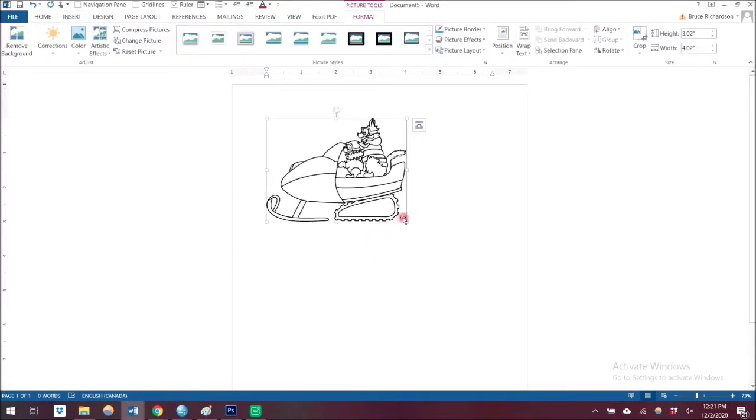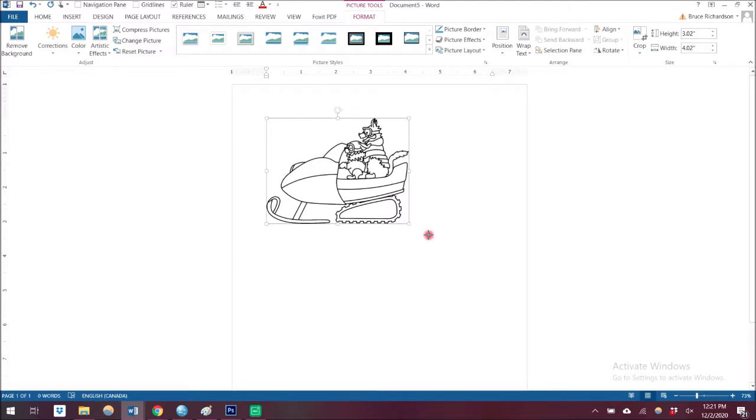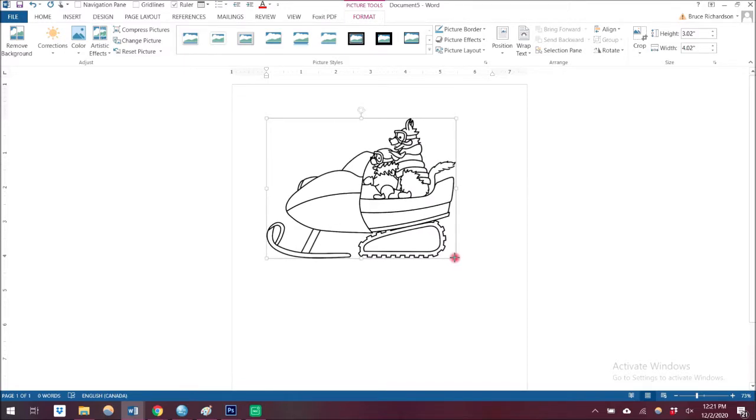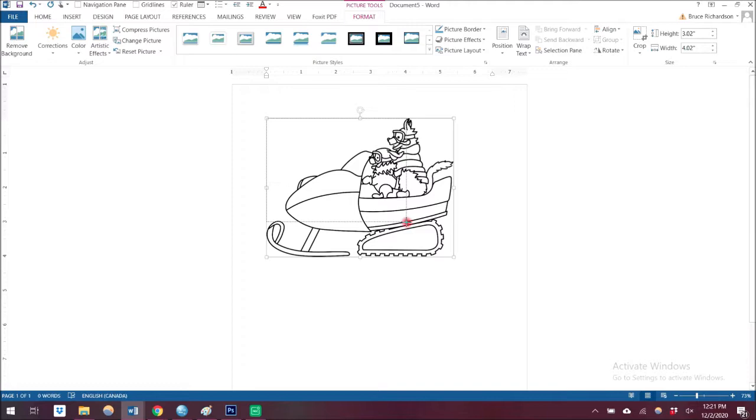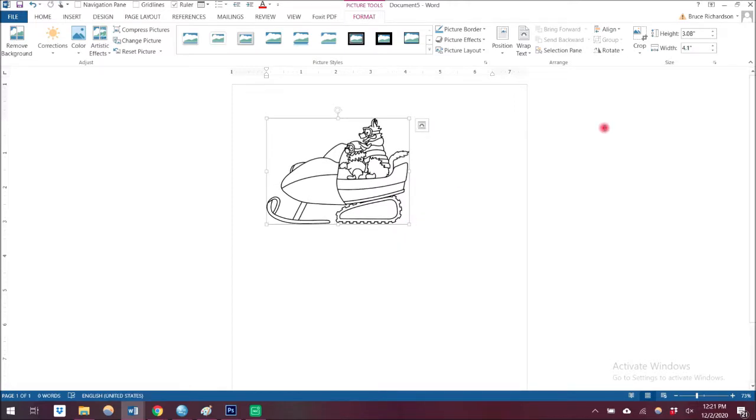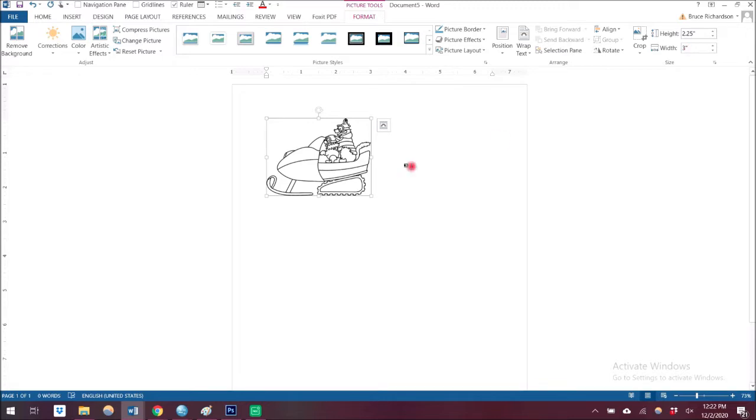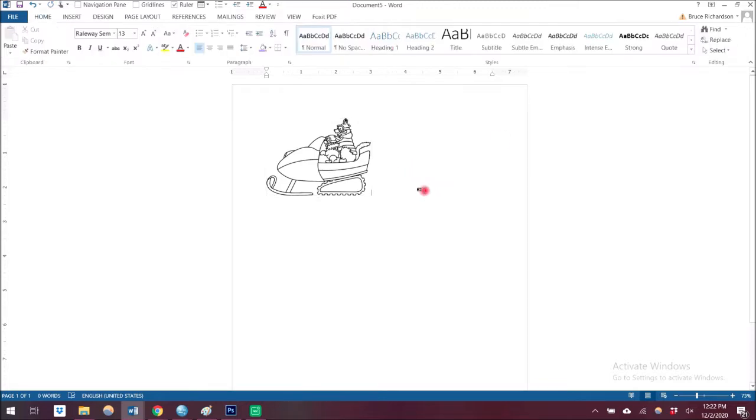You can see the stamp is there and you can resize it by pulling on these corners. If you hold down the shift button it'll keep the aspect ratio the same so it doesn't get distorted. Or what I prefer to do is change the height and width to however many inches I would like it to be. For this one I chose three inches because it's going to go on a standard A2 card.